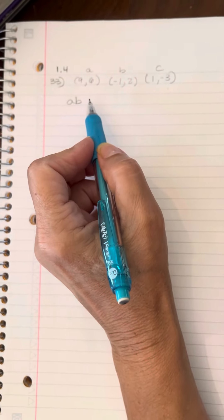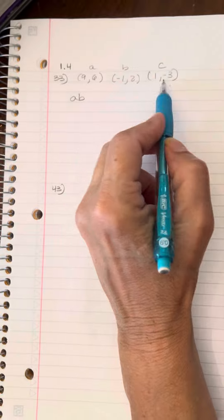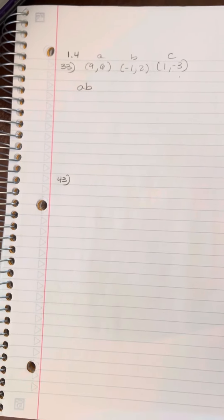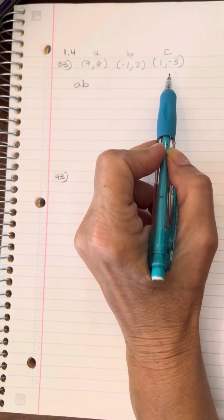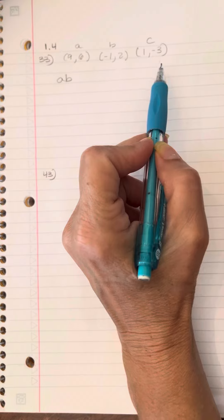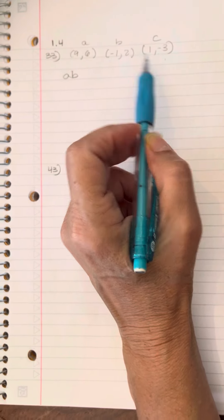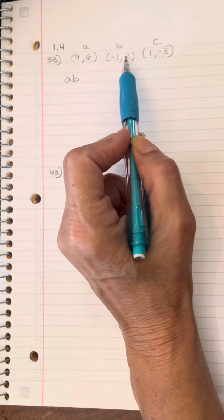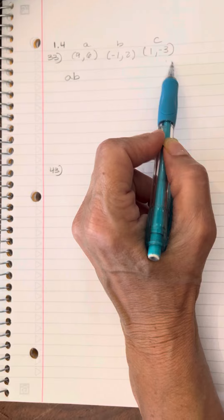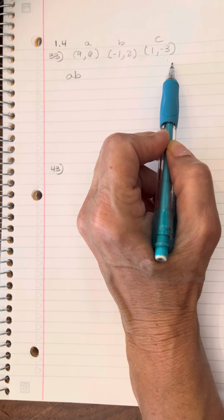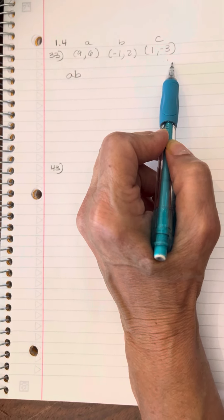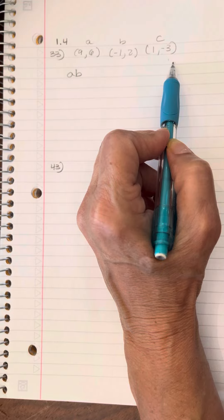Question 33 says, use the slopes of these three points to determine if they are the vertices of a right triangle. If, in fact, they are the vertices of a right triangle, then the slope between A, B, B, C, or A, C would indicate the lines are perpendicular, meaning their slopes are the negative inverse.